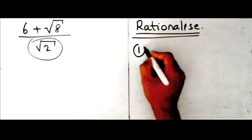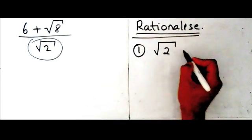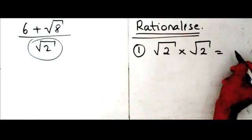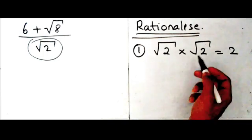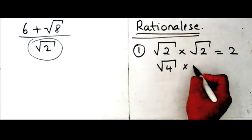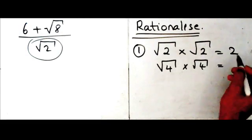The first fact is, if you multiply two thirds, so let's say for instance I've got square root of two times square root of two, the answer is two. If you've got something like square root of four times square root of four, the answer is four.